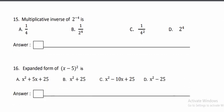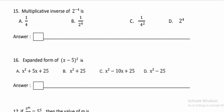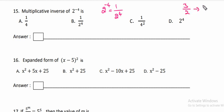15th question: the multiplicative inverse of 2. The multiplicative inverse can be written as 1 divided by 2. The multiplicative inverse of any fraction — if it is 2 by 3, we write 3 by 2. So the multiplicative inverse of 2 is 1 over 2.